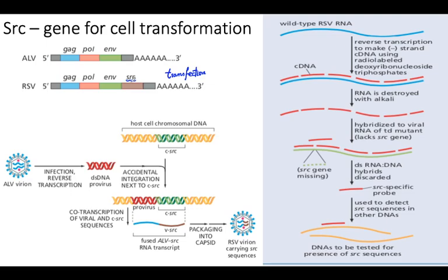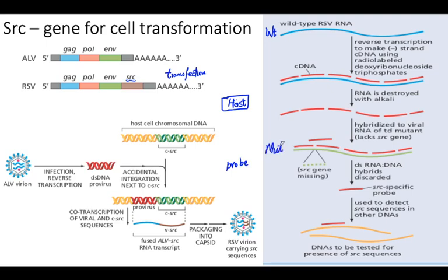People were interested to see whether the Sarc gene is present in the host cell genome. To identify it, we need a probe. Two different types of Rous Sarcoma Virus were used: one is called wild type and the other is called mutant — the mutant type is lacking the Sarc gene.